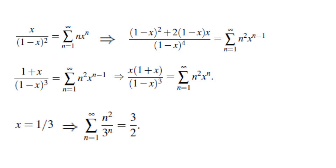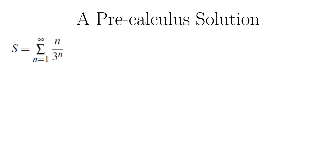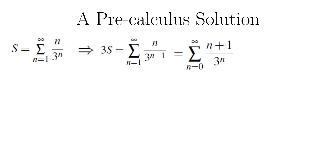Now we're going to move on to a solution that does not require calculus. Here is a pre-calculus solution to the problem. Let s be the sum. We are going to multiply both sides by 3. We get 3s equals the sum of n over 3 to the power of n minus 1, where n goes from 1 to infinity. I'm going to change n to n plus 1, which gives the sum of (n plus 1) over 3 to the power of n, where n goes from 0 to infinity.